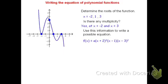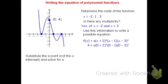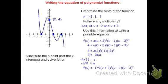Again, this is a possible equation because I don't know the stretch factor. Looking for a point that's not the x-intercept, I see that 0, 4 works. I'm going to substitute x equals 0 and y equals 4. When I simplify the parentheses: 0 plus 2 is 2, but 2 squared is 4; 0 minus 1 is negative 1; 0 minus 3 is negative 3, and negative 3 squared is 9. So this becomes 4 times negative 1 times 9, which is negative 36. Dividing both sides by negative 36, I get that a equals negative 4 over 36, which reduces to negative 1 ninth. The actual equation is f of x equals negative 1 ninth times the quantity x plus 2 squared, times the quantity x minus 1, times the quantity x minus 3 squared.